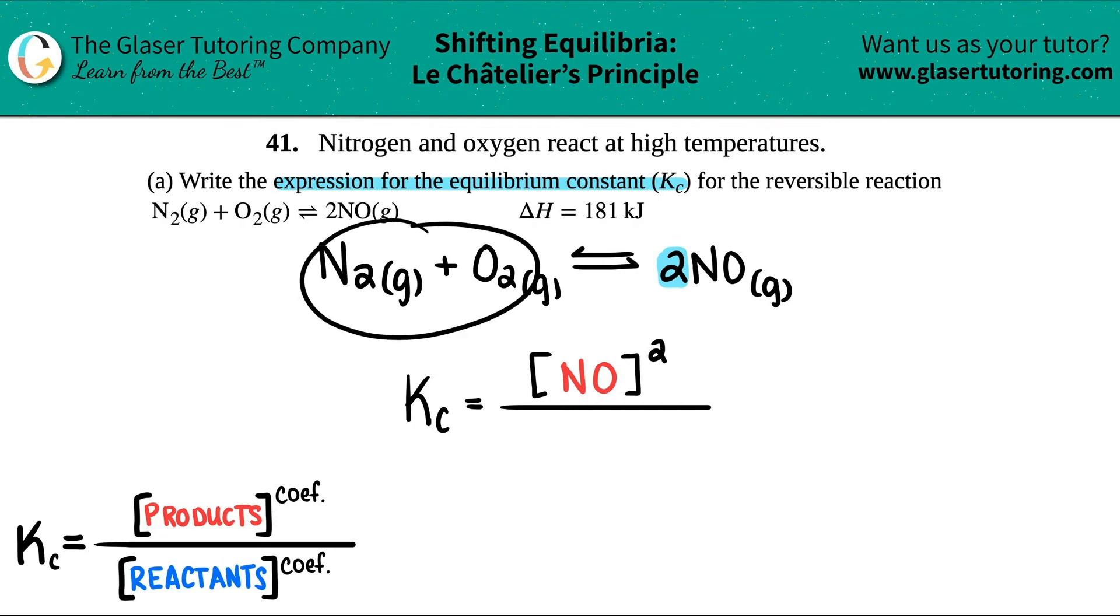So now I move on to my reactants. I got two of them. So I'll do the first one. I got N2. Close that bracket. And there was no number in front, which means that there was one of them. So I can raise this to the first, but anything to its first is itself. So I don't have to do that.